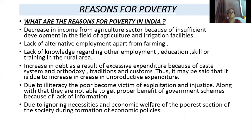The first reason is a decrease in income from the agriculture sector because of insufficient development in the field of agriculture and irrigation facilities. Agriculture and irrigation infrastructure are not well developed, resulting in very low agricultural income. The second reason is a lack of alternative employment apart from farming — farmers cannot do any other jobs.